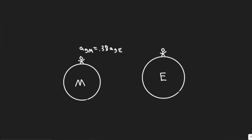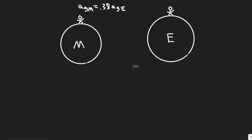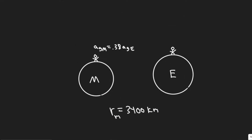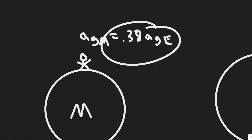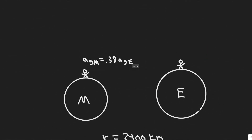In this problem we're told: given the acceleration of gravity at the surface of Mars is 0.38 of what it is on Earth, and that Mars' radius is 3,400 kilometers, determine the mass of Mars. We're given the radius of Mars is 3,400 kilometers, and the acceleration due to gravity on Mars is equal to 0.38 of the acceleration due to gravity on Earth.